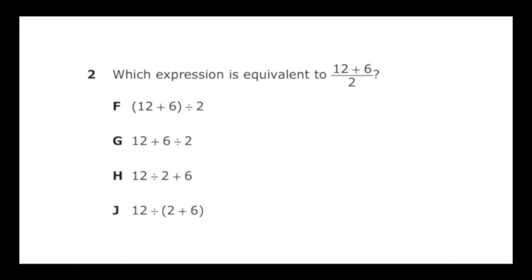Number two from the 2022 sixth grade math STAR test says which expression is equivalent to 12 plus 6 all divided by 2. In order to work this problem, I have to know that the two numbers in the numerator have to be added before I divide by 2. So if I add 12 and 6, I'm going to get 18, and then if I divide that by 2, I'm going to get 9.